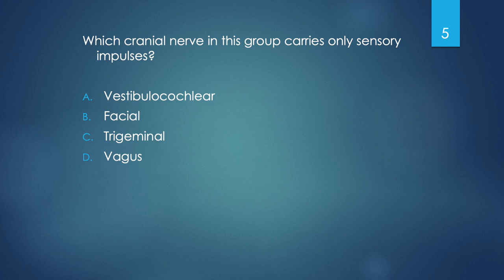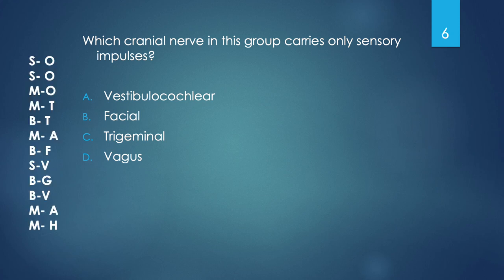Let's start off with a pop quiz of some things covered in previous chapters. Which cranial nerve in this group carries only sensory impulses? Vestibulo-cochlear, facial, trigeminal, or vagus? You could try to remember all cranial nerves and their functions, or use the mnemonic 'O, O, O, to touch and feel, very good velvet, A,' giving you the first letter of each cranial nerve.